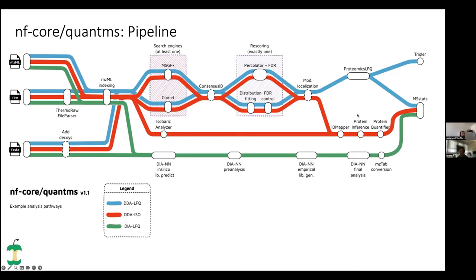The top branches are usually done by OpenMS tools — a framework for mass spec analysis — while the DIA branch is done by DIANN, a separate package where we worked in close collaboration with the author to make it as efficient as possible in a distributed computing environment. I will go over the steps one by one.